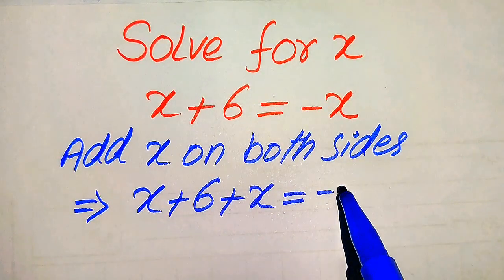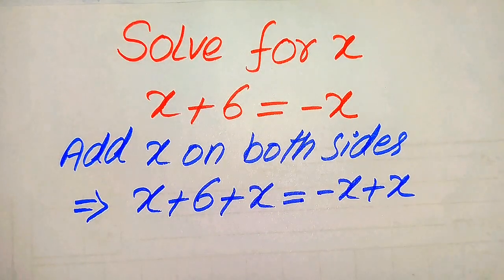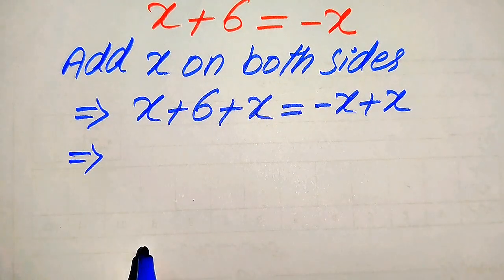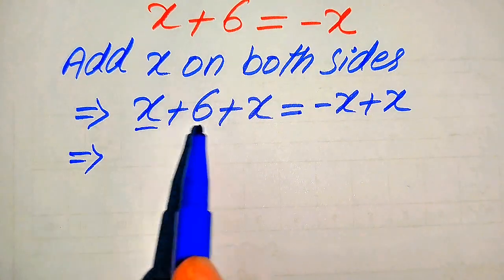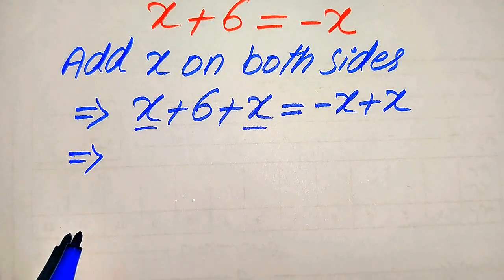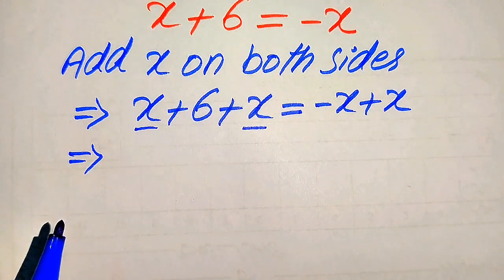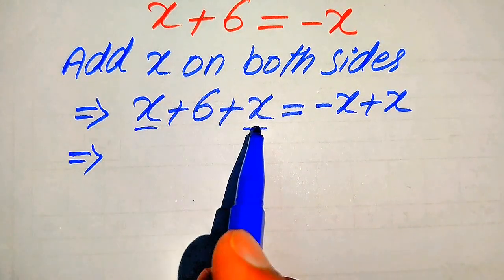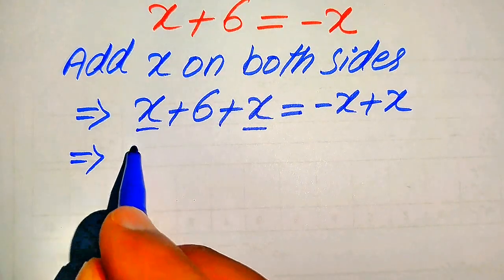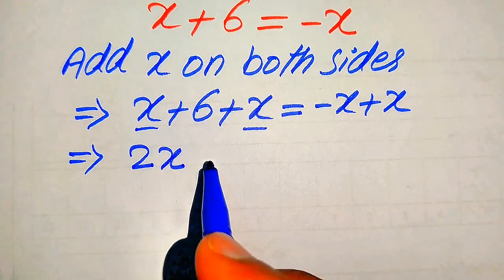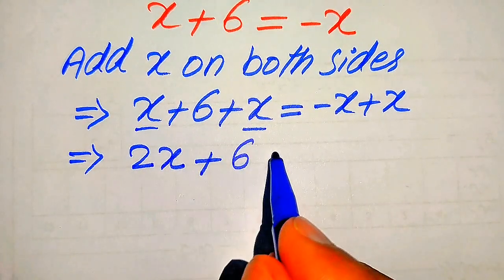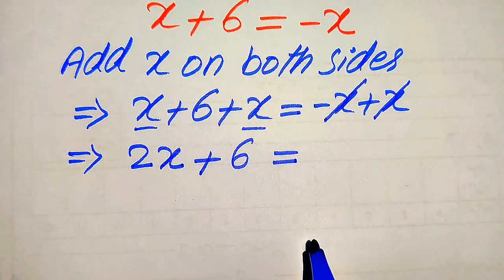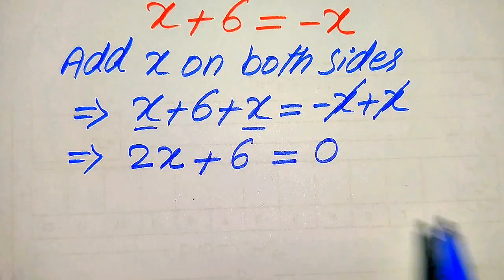Here we have minus x and we add plus x. In the next step we need more simplification and we add the like terms. We have two variable like terms, so we add their coefficients. The coefficients of both terms are 1, and 1 plus 1 becomes 2, giving us 2x plus 6 equals 0, since the negative and positive x terms cancel out.